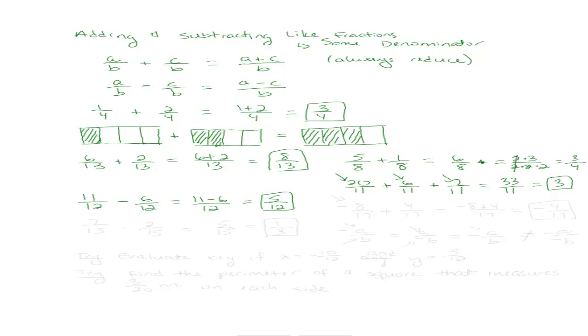What if we had 7 over 15 minus 2 over 15? What would you get out of that? 5 over 15. 5 over 15 I need to reduce. And what is it reducing to? 1 third. 1 third. 2 third. Good.